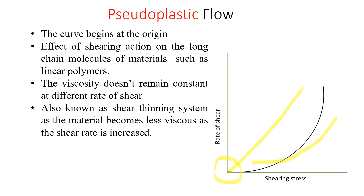If we talk about viscosity, the viscosity of a pseudo plastic substance decreases with an increase in the rate of shear. As we increase the rate of shear, you can see the viscosity will be decreasing. We can determine an apparent viscosity at any given rate of shear.